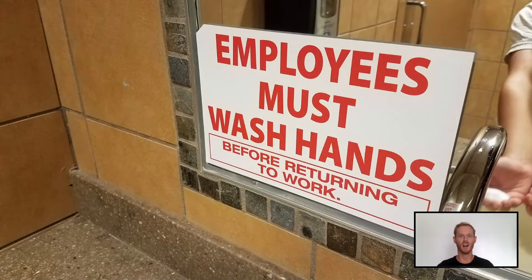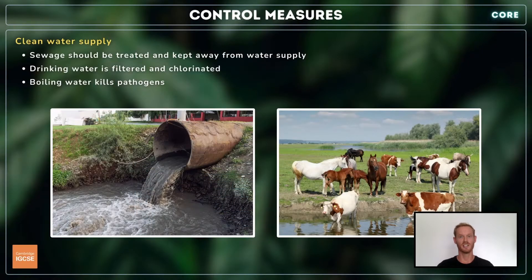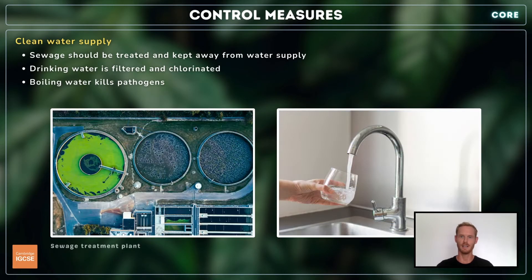Many pathogens are highly transmissible, so control measures are put in place to limit their spread. You need to explain the importance of a clean water supply, hygienic food preparation, good personal hygiene, waste disposal, and sewage treatment. Water contaminated with sewage or animal waste contains harmful bacteria and could infect vast numbers of people if used for drinking. To prevent this, raw sewage should be treated and kept away from water supplies, and drinking water should be purified.